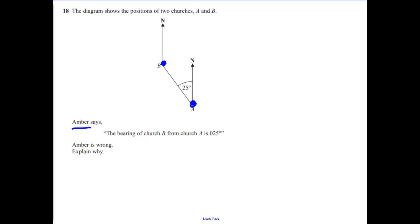Well, when we read a bearing, it's B from A. That means we're at A. We're trying to get to B. You always measure from north.